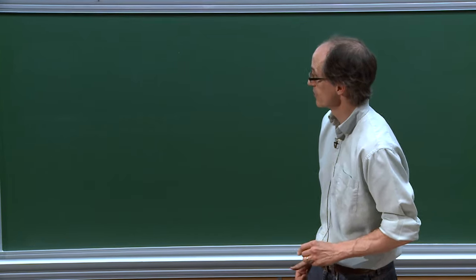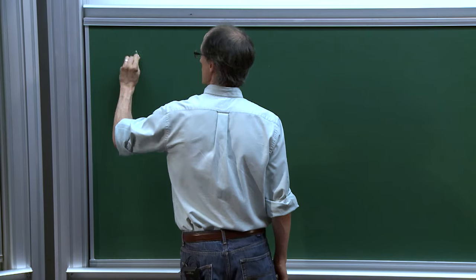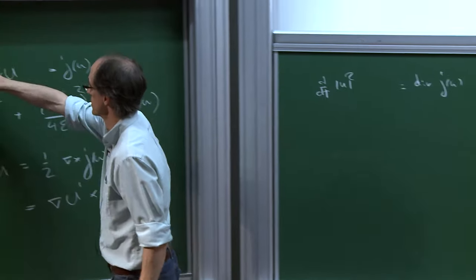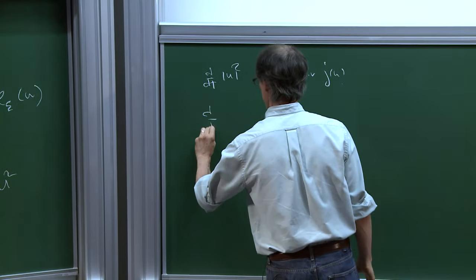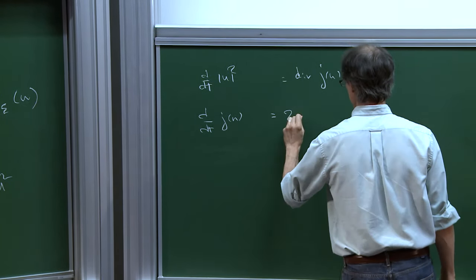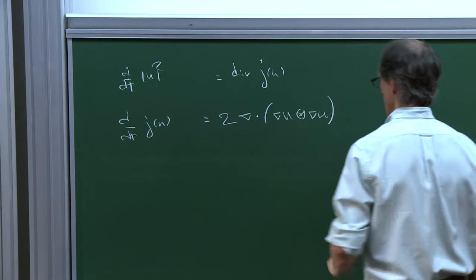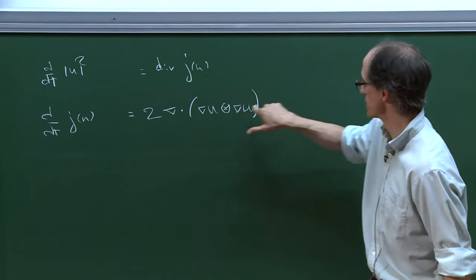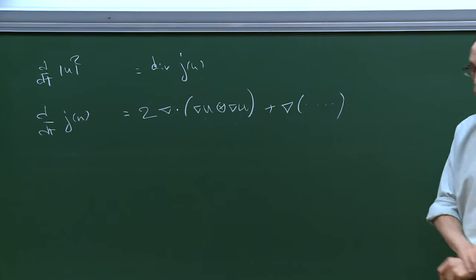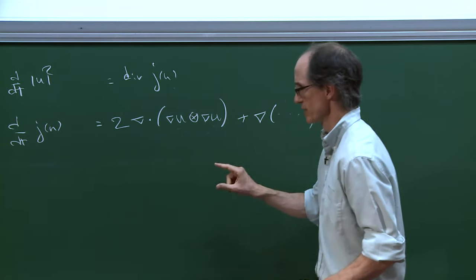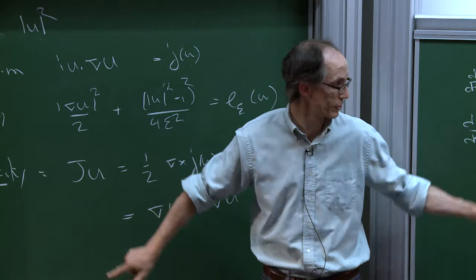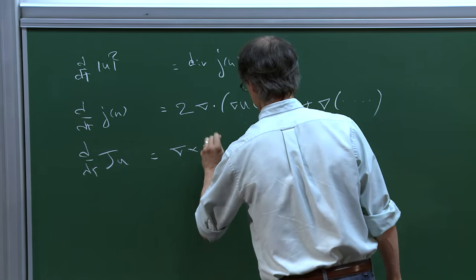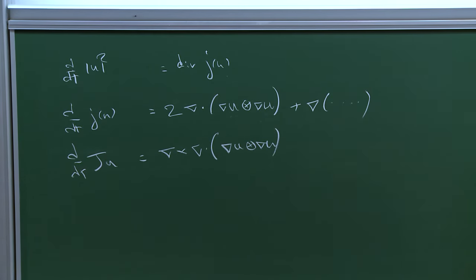There are a number of conservation laws I will recall. For example, conservation of mass has the form of the continuity equation: the time derivative of the density is the divergence of the momentum. There's conservation of momentum, where I form the 3×3 matrix whose ij entry is the real inner product of the i-th and j-th derivatives and take the row-wise divergence, plus a gradient term I won't care about much. The reason I won't care about it is that I'm about to take the curl of this thing. To understand how the vorticity evolves, I take the curl of this equation and find that ∂_t of the vorticity equals the curl of the divergence of (∇u ⊗ ∇u). So there's a nice evolution equation for the vorticity.